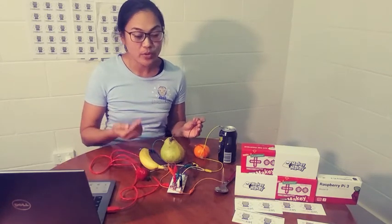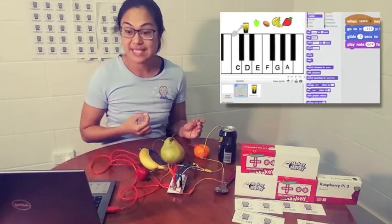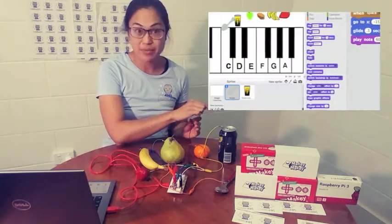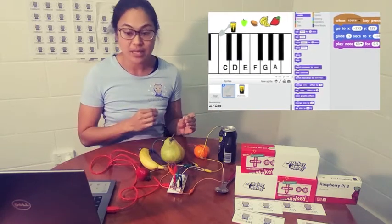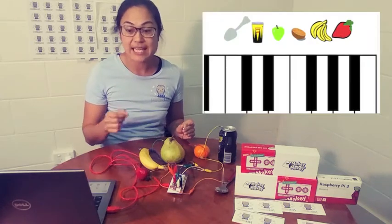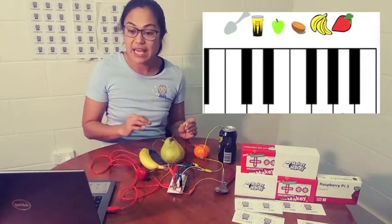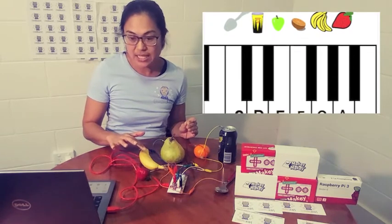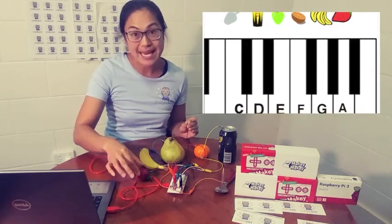So for example we're using the spoon as note C, we're using the aluminum can as note D on the piano, and we're using the mandarin as note E on the piano, and the pear note F, and G is the banana, and the strawberry is note A on the piano.